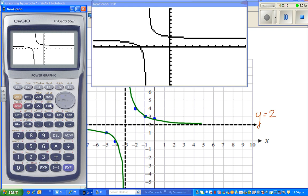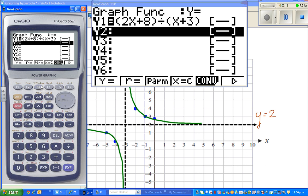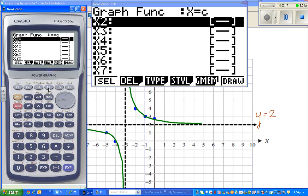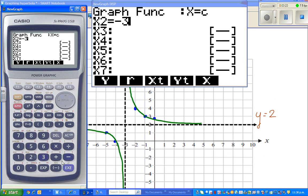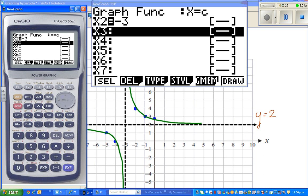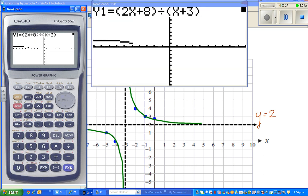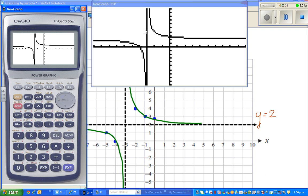So you go exit, go to type, and this is x equals constant. So you press F4, and I'm saying I want to draw the line x = -3. So enter -3. And then draw it. Can you see this line? This line is the vertical asymptote.